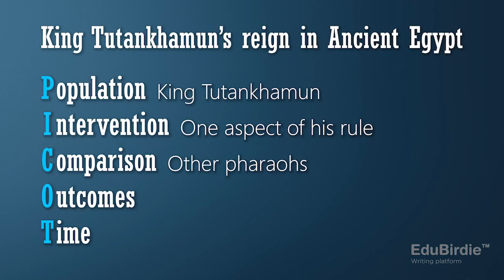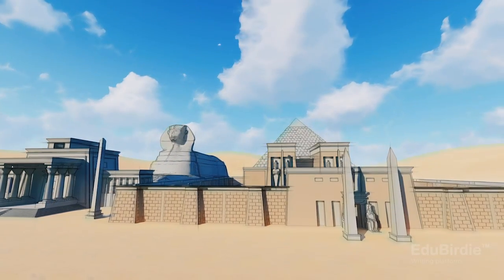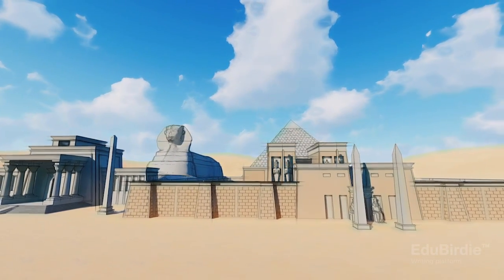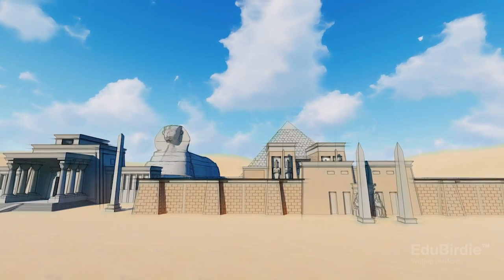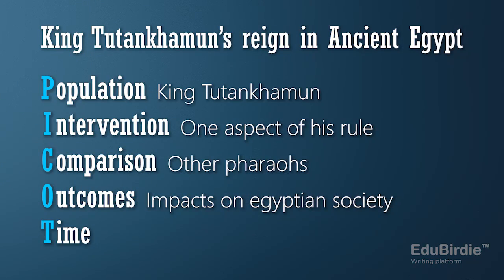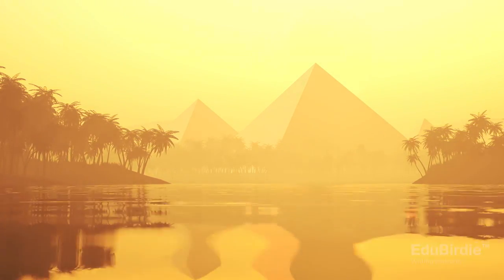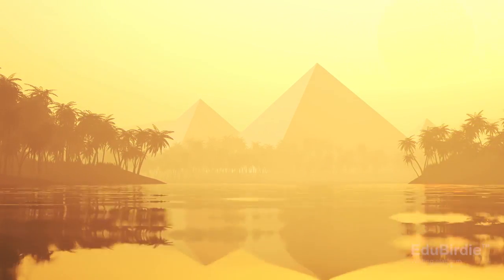O is for Outcomes, which is pretty self-explanatory. In your case, the outcomes can be the impact of his rule on ancient Egyptian society, depending on the focus of your paper. And finally, T, which stands for Time. This is the time frame of your study. The time frame here would be the entire time that Tutankhamun was in power.